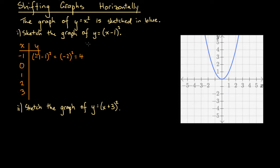At x equals 0, we have (0 minus 1) squared, which is (minus 1) squared. Negative 1 times negative 1 — a negative times a negative is positive, and 1 times 1 is 1. So we get the point (0, 1). At x equals 1, we get (1 minus 1) squared, which is 0 squared. Since 0 times 0 is 0, y equals 0.